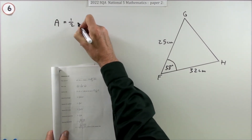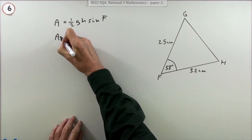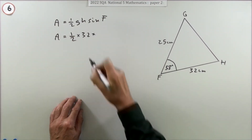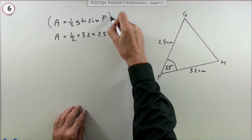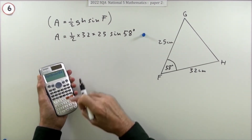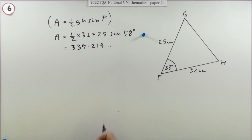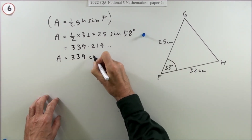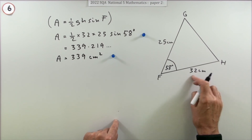The angle F is the included angle, so it's ½ × GF × FH × sin F, meaning ½ × 32 × 25 × sin 58°. Writing that expression earns the first mark. Make sure you're in degrees mode, press the buttons, and you get 339.219... Rounding gives 339 cm² - or 340 cm² if rounding to two significant figures - for the second mark.